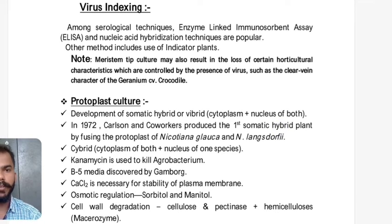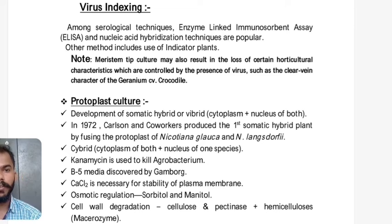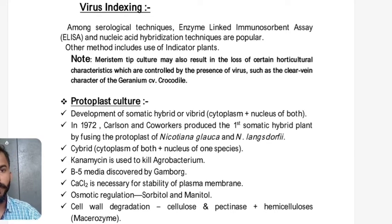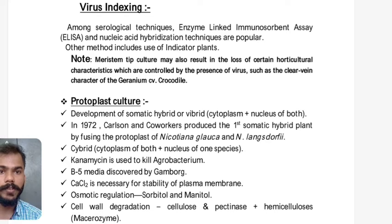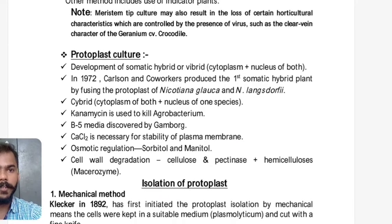Virus indexing: Among serological techniques, ELISA (Enzyme-Linked Immunosorbent Assay) and nucleic acid hybridization techniques such as Southern blotting and Northern blotting are popular. Another method uses indicator plants — plants that show symptoms of viral infection very clearly and distinctly. Note: meristem tip culture may result in loss of certain horticultural characteristics controlled by the presence of a virus, such as the clear vein character of geranium cv. Crocodile.